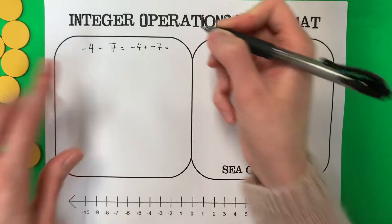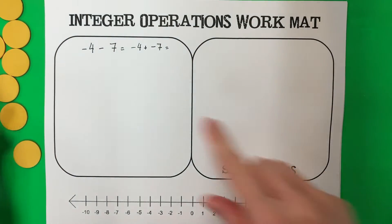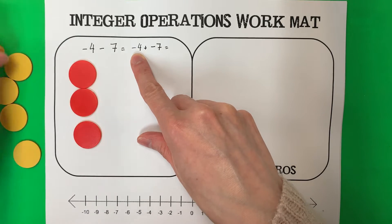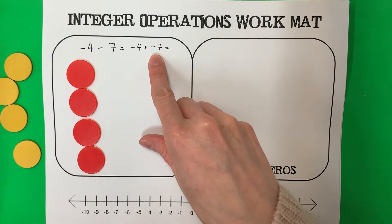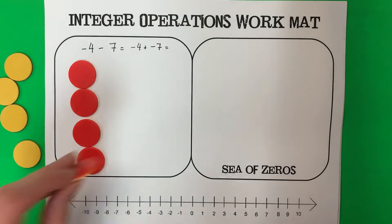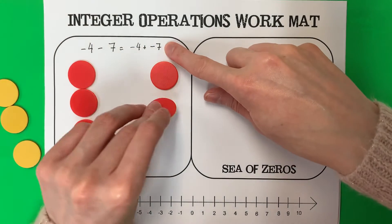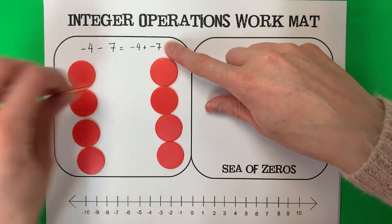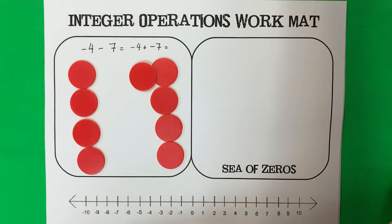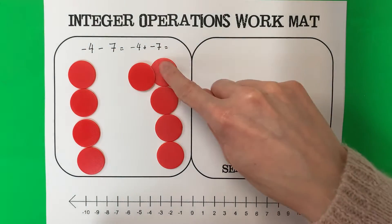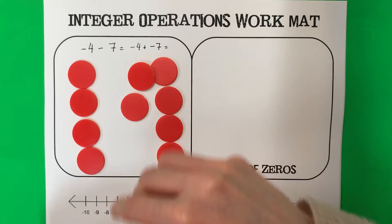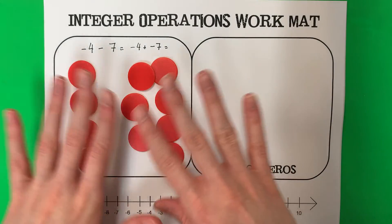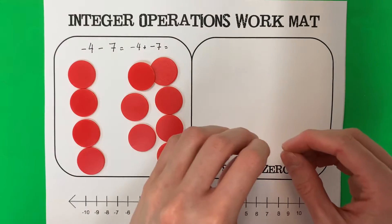Let's go ahead and model it with our buttons. Negative 4 means 4 reds — red is negative. And then negative 7, so that's going to be 7 more reds. I do not have any yellows, so I cannot remove anything.